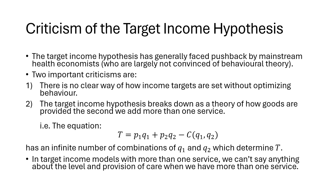If we have the target income equation where our physician is now providing two different types of health services, there is any combination of these services that can be provided which determines T. So target income models that have more than one healthcare service cannot say anything about the level of healthcare provision at all. But some people are still convinced of this target income hypothesis.